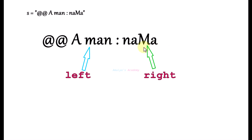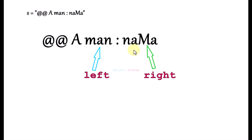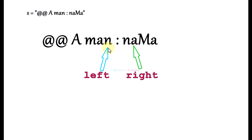Next, check the character at the right pointer — it is an alphabet, so stop. Compare both characters: convert to lowercase and compare. Here it is a match, so increment the left pointer by 1 and decrement the right pointer by 1. We continue this process — checking, converting to lowercase, comparing, and moving the pointers inward each time there is a match.